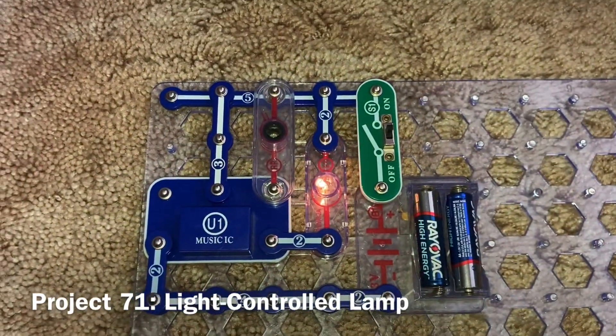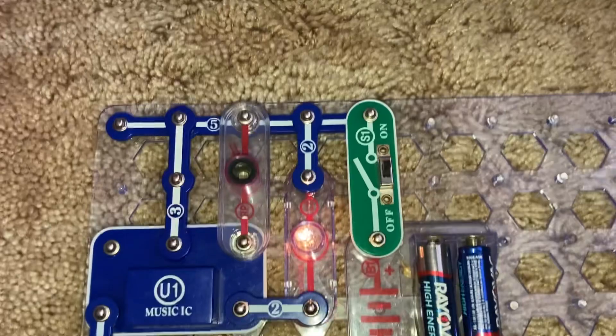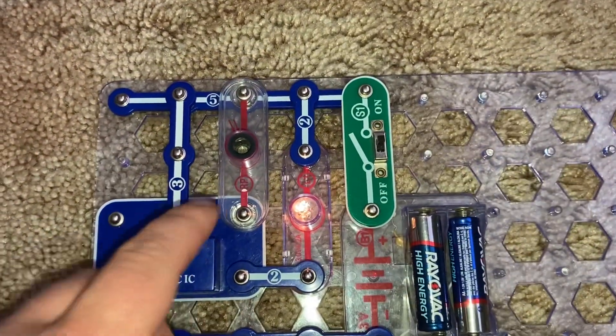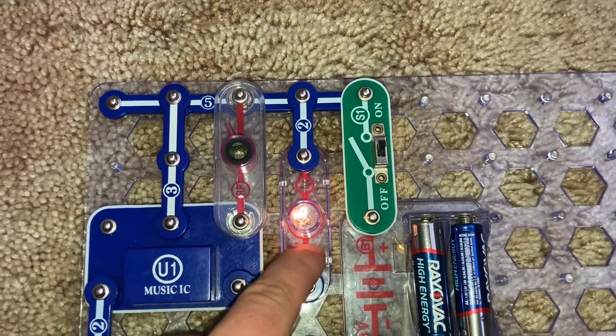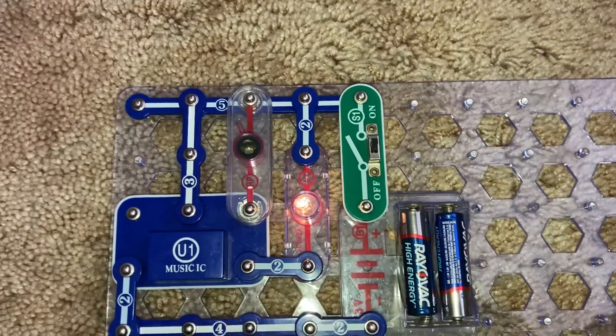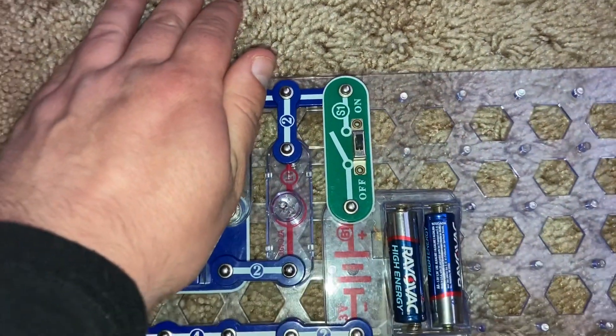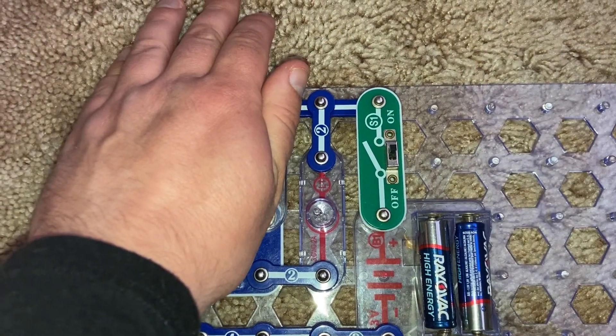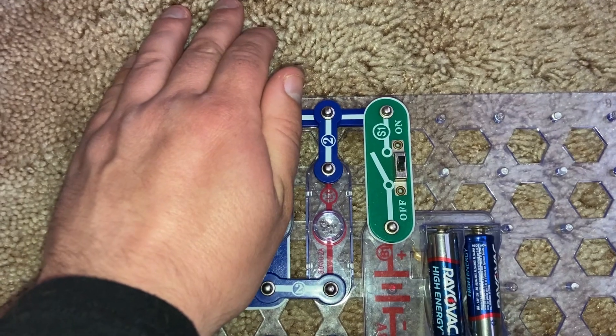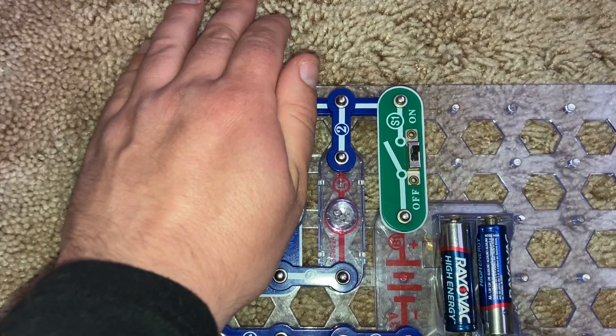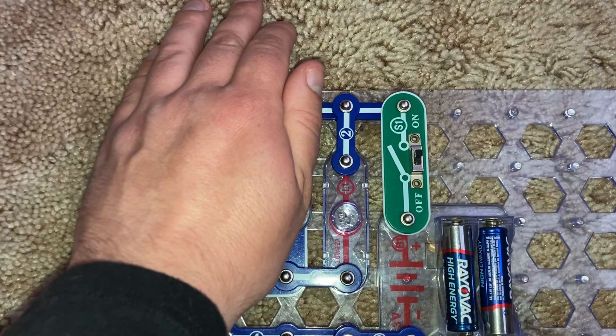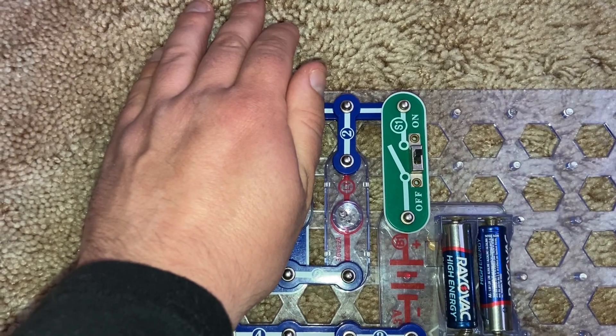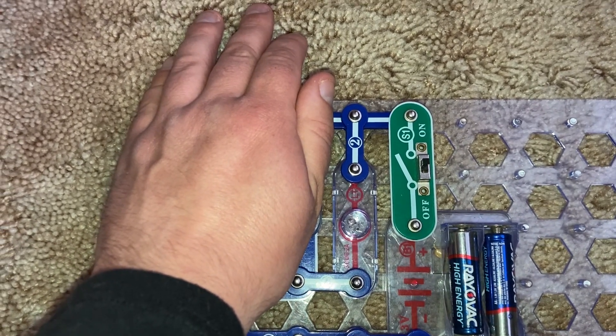Project 71 is light controlled lamp. When I shine a light on the photoresistor, the L1 lamp comes on. Then when I cover the photoresistor, the L1 lamp goes out. That's because when I cover the photoresistor, the electrical resistance increases, preventing current from flowing through the lamp.